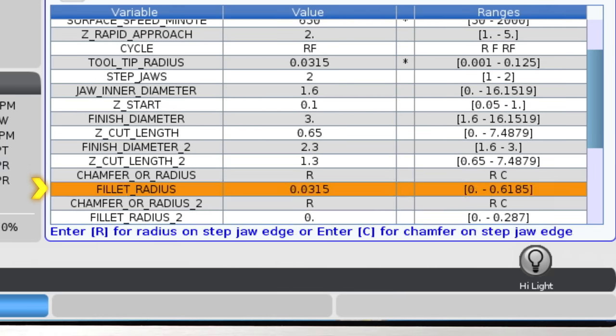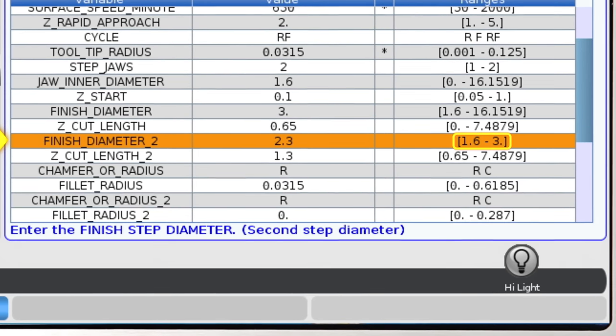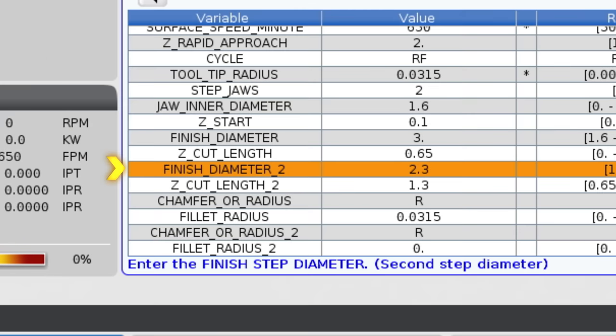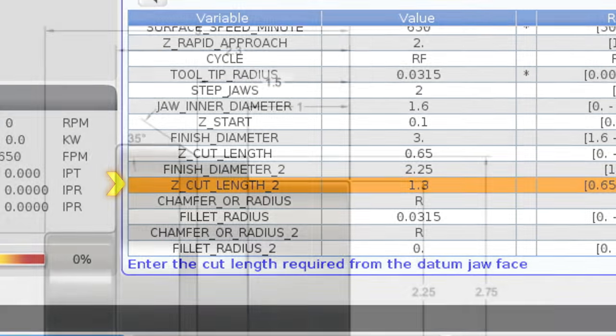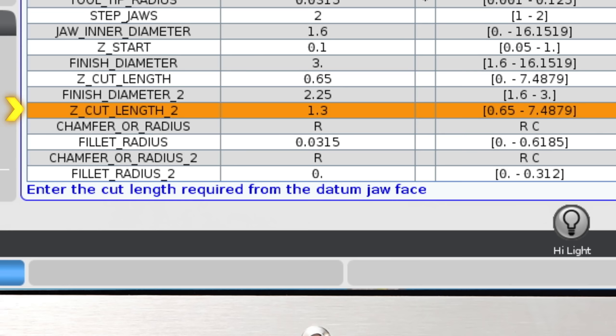Finish diameter 2 will be the diameter I am clamping on for the second side of my step jaws. The value here will be smaller than the raw stock diameter and our ranges reflect that. After referring to my blueprint, that will be entered here. The cut length required for the step jaw diameter is taken from the datum. And again, the ranges take into account the previously entered cut length. I'm going to change this value here.